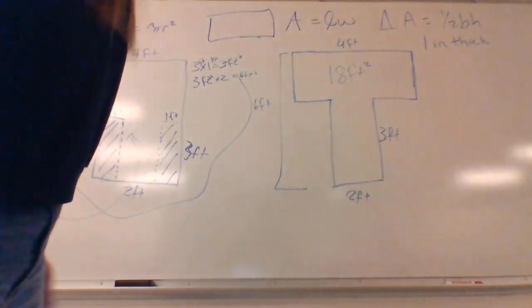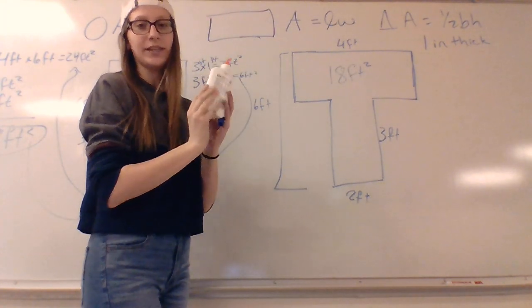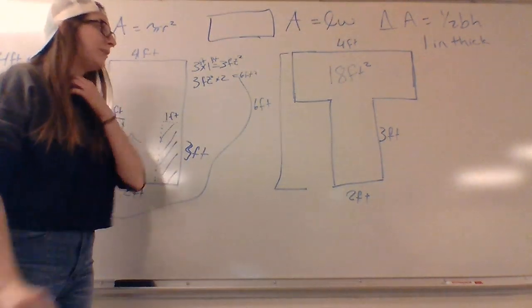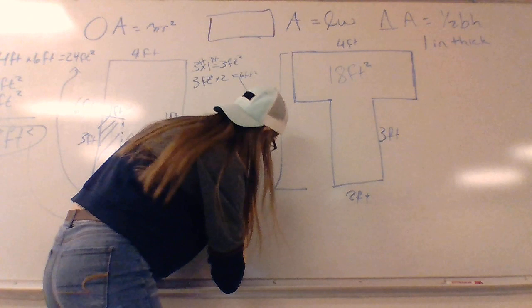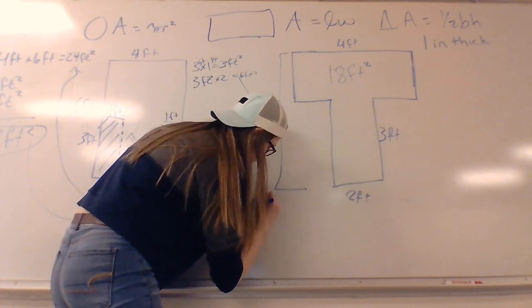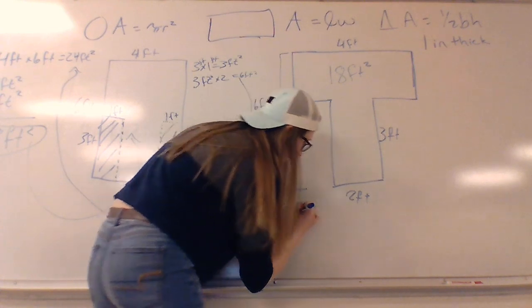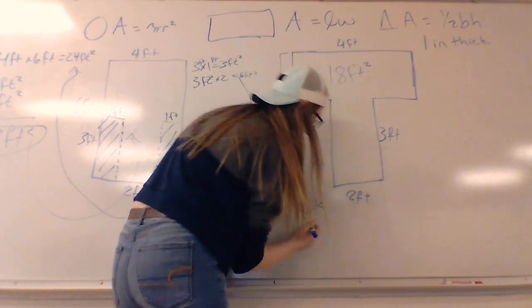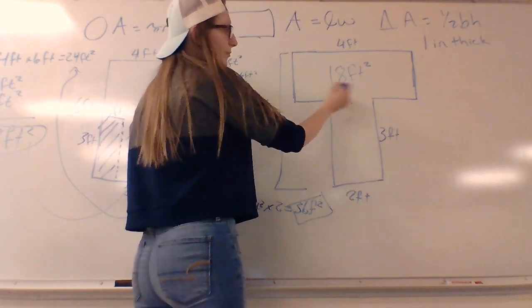Now remember, this is just the front side. We also need to find the area of the back side. To do so, we're just going to multiply it by two because it's the same area. So we are going to do 18 feet squared times two equals 36 feet squared. 36 feet squared is the area of both of these T shapes.